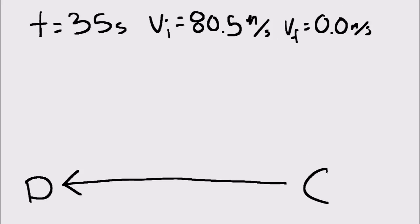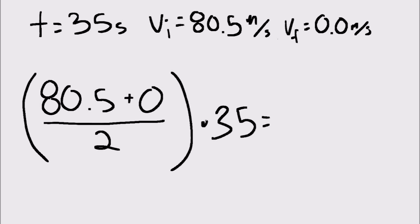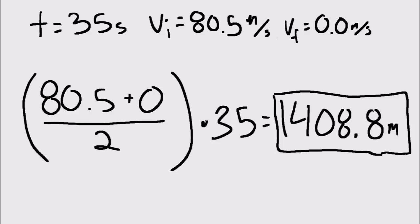For events C to D, we can use the same equation as we did from events B to C. This time we know that our time is 35 seconds, our initial velocity is 80.5 meters per second, and the final velocity is 0 meters per second. Again, we can just plug in our numbers and calculate to find how far the plane traveled between events C and D. The plane traveled 1,408.8 meters between events C and D.